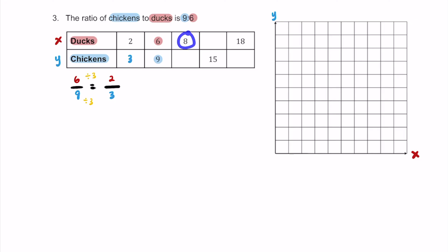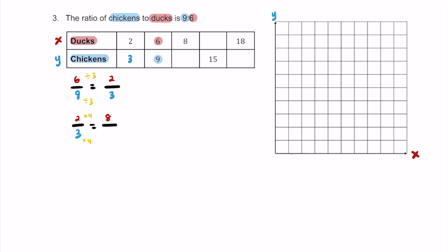What about when there are 8 ducks? 6 doesn't fit into 8 evenly, so we can use the equivalent 2-to-3 ratio. Using the ratio 2 to 3 with 8 ducks on top: how does 2 become 8? Multiply by 4. Multiply the bottom by 4 as well: 3 times 4 is 12. So we have 12 chickens every time we have 8 ducks.